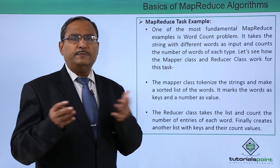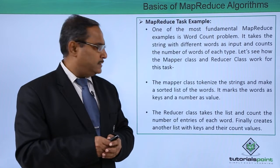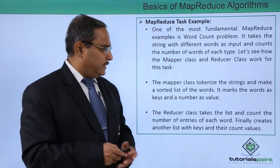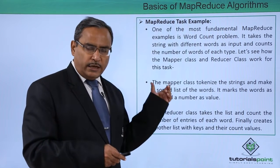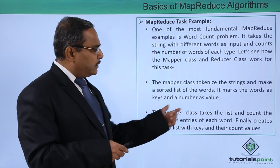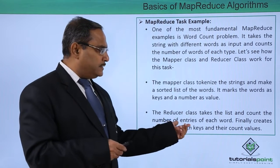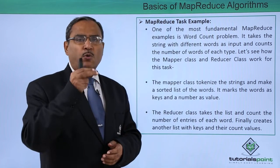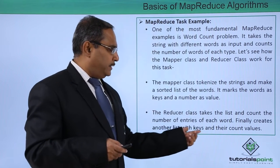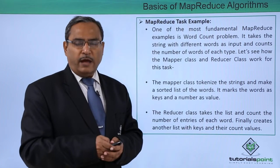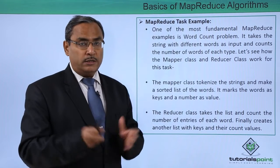The word count problem takes a string as input and counts the number of distinct words in that string. The mapper class tokenizes the strings and makes a sorted list of words, making each word the key and its frequency of occurrence the value. The reducer class takes that list and counts the number of entries of each word, then creates another list with keys and their respective count values — the number of times each word occurred in the sentence.